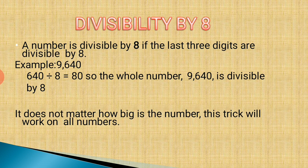Next is the divisibility rule of 8. A number is divisible by 8 if the last 3 digits are divisible by 8. For example, consider the number 9640. The last 3 digits are 640, and if we divide 640 by 8 we get 80. That means 9640 is divisible by 8. This method applies to numbers of any size.